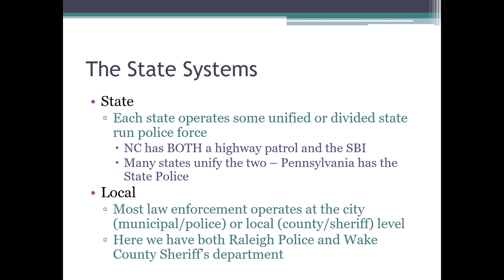North Carolina has broken it up. We have the highway patrol — they primarily control traffic on the highway — and we also have the State Bureau of Investigation, which is kind of a mini-FBI. These are two separate organizations. Other states, like Pennsylvania, don't do this — Pennsylvania has the state police, which operates like both our highway patrol and the SBI combined. It's a unified agency. States will elect one of those two patterns, and it's about a 50-50 divide.